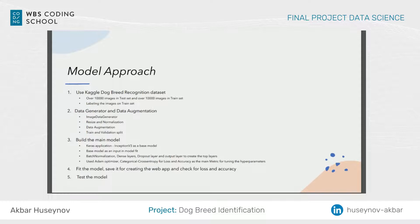To create the model itself, after trying different approaches for the neural network models and layers, I decided to go with the pre-trained Inception V3 as a base model and insert it into the main one. To tune the hyperparameters I used the Adam optimizer, categorical cross-entropy for loss, and accuracy as the main metric.